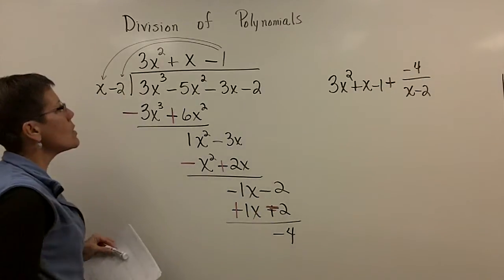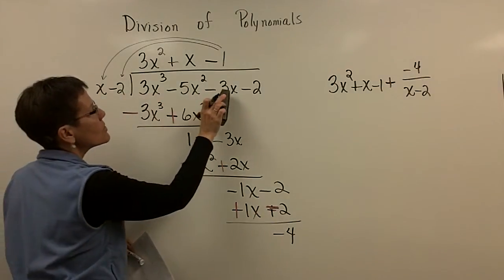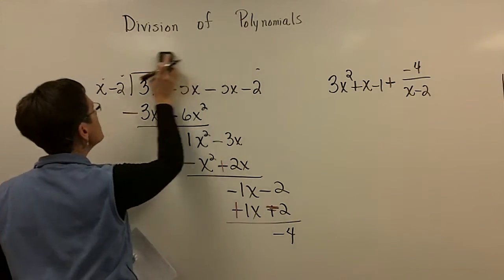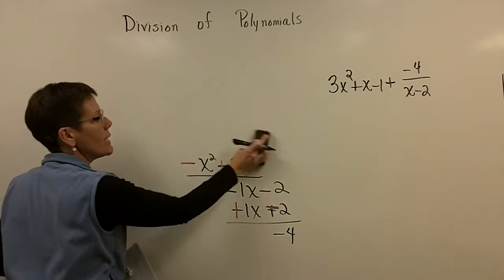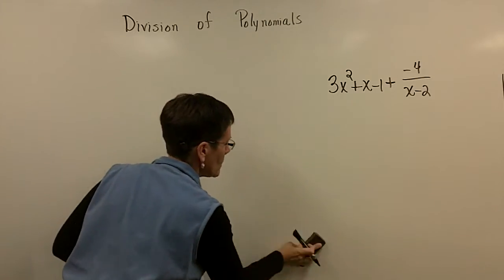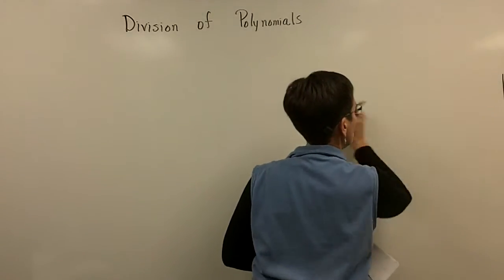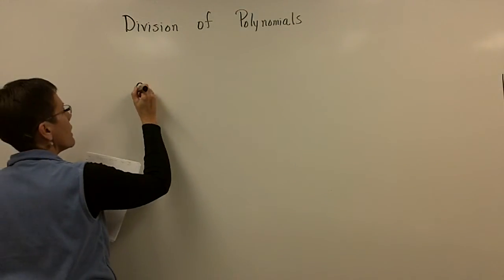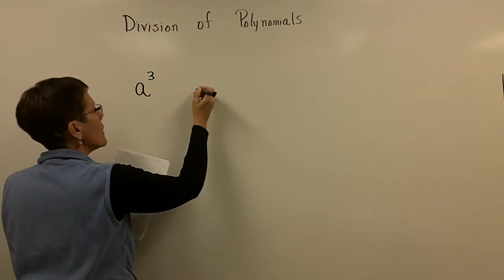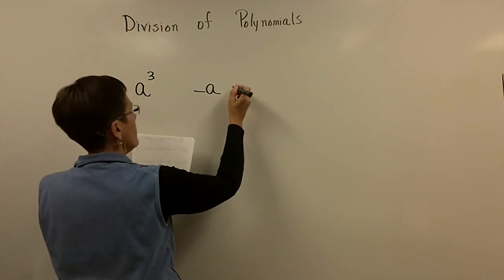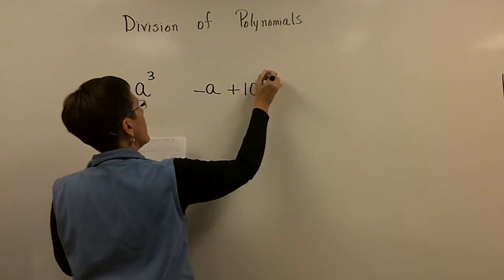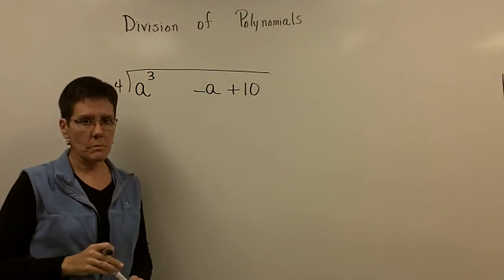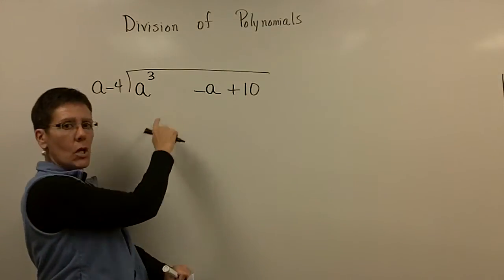Let's do one where you're missing a term here in the polynomial. So I'm going to have a problem that's got an x cubed term, but it's going to be missing an x squared term in the next problem that we're going to do. So let's see. I'm going to use some a's. So I've got a cubed and then a plus 10. And I want to divide that by a minus 4.